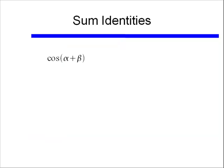Now that we've found the sum identity for sine, let's look at it for cosine. If I have cosine of alpha plus beta, that's equal to cosine alpha times cosine beta, minus sine alpha times sine beta. When I had sine of alpha plus beta, I ended up adding my two terms. In this case, for cosine of alpha plus beta, I'll be subtracting: cosine alpha times cosine beta, minus sine alpha times sine beta. That's an important difference.